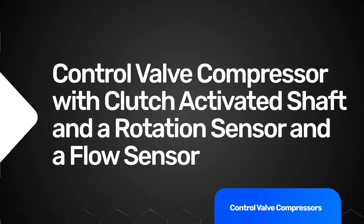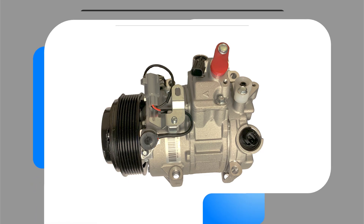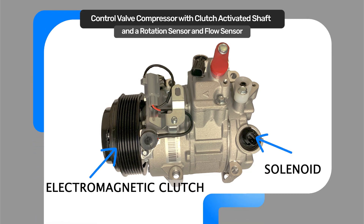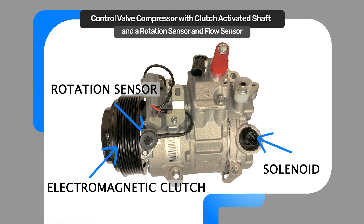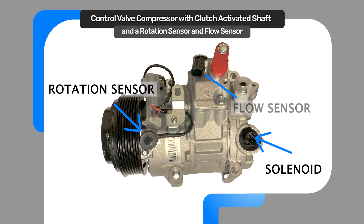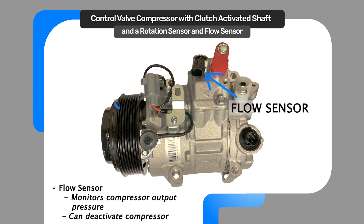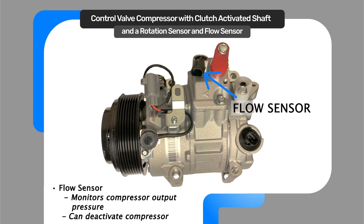This control valve compressor will feature an electromagnetic clutch, solenoid, rotation sensor, and a flow sensor. The flow sensor verifies compressor activation by monitoring compressor output pressure and will deactivate if no pressure flow is detected.